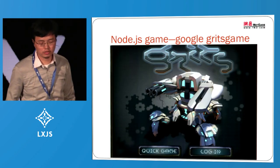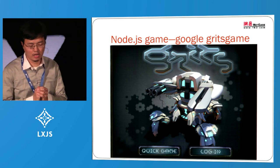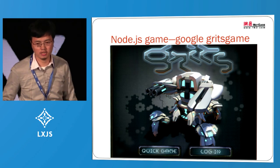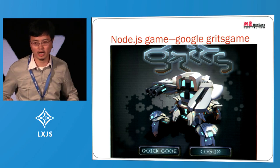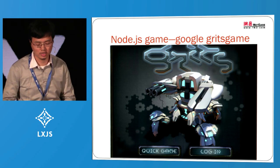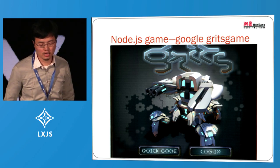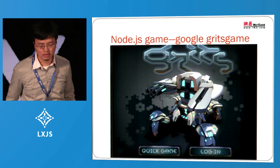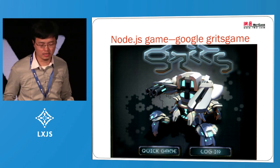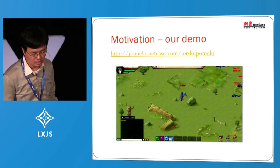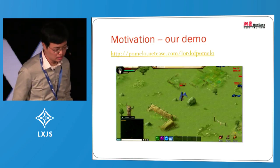Google also published its game called Grits Game, which also uses Node.js as a game server. There is an excellent talk at Google I/O 2012. It is also a good demo, but has the same problem — the server side is too simple.